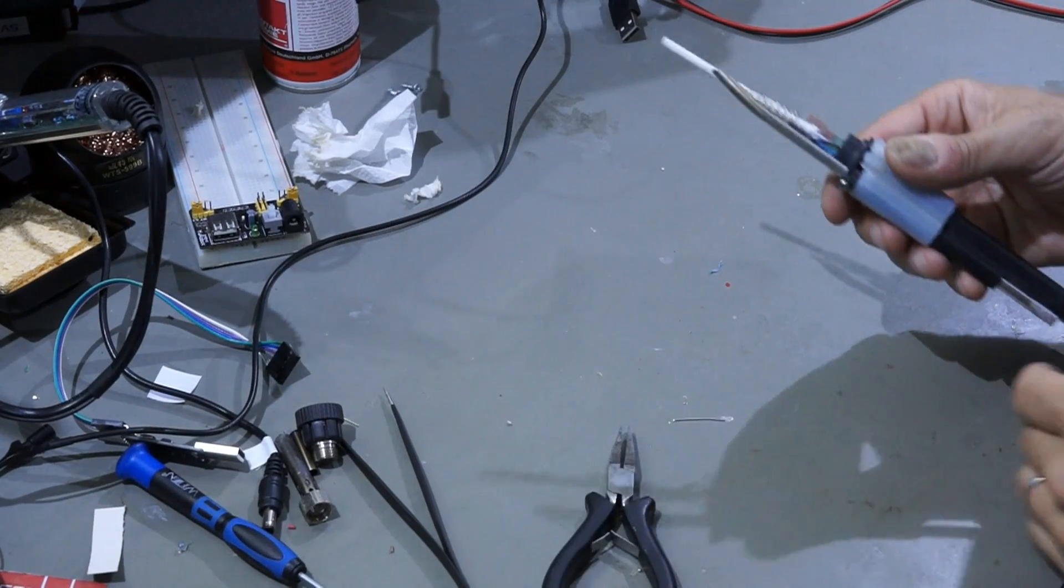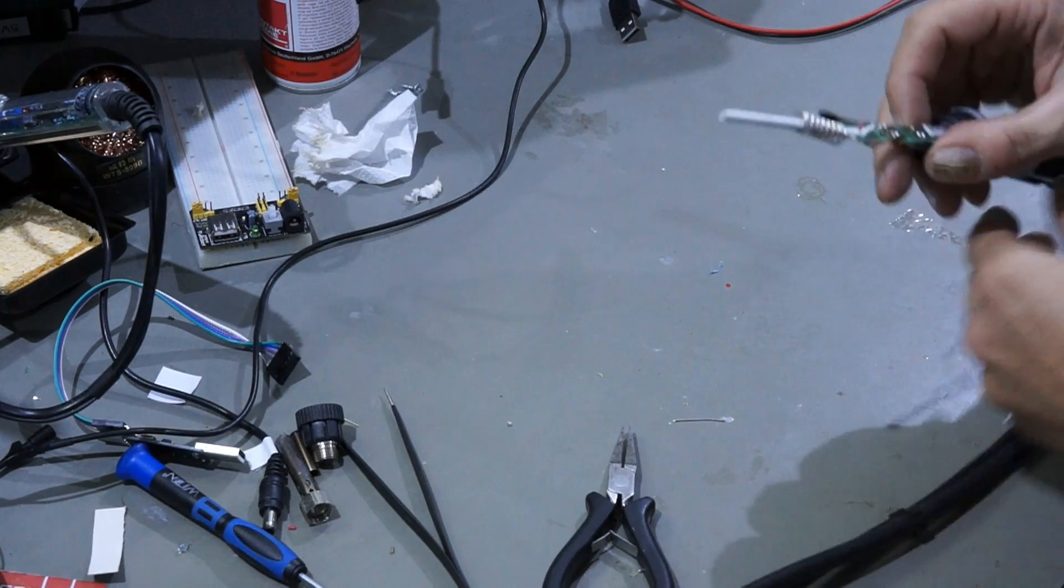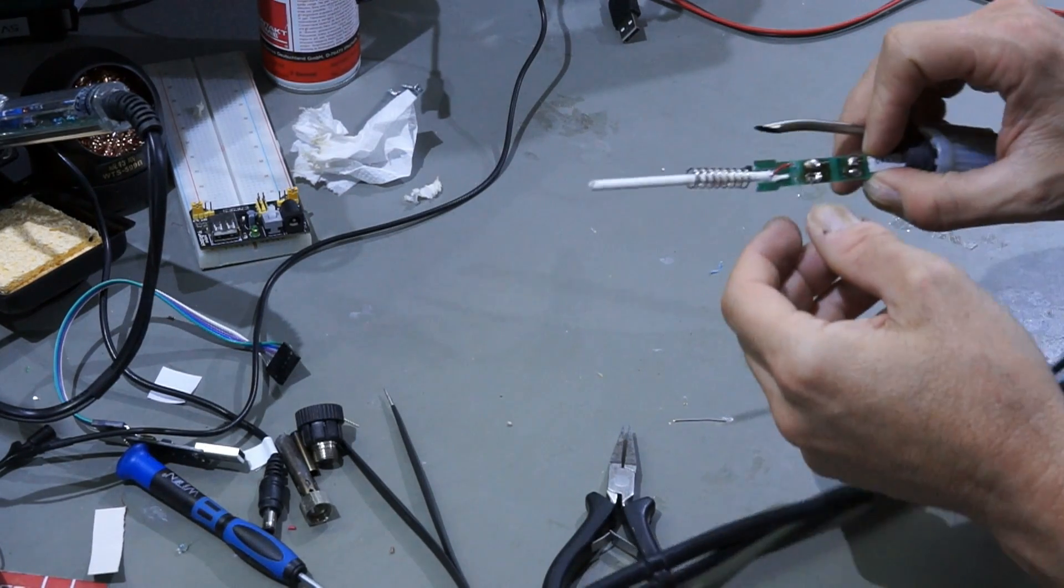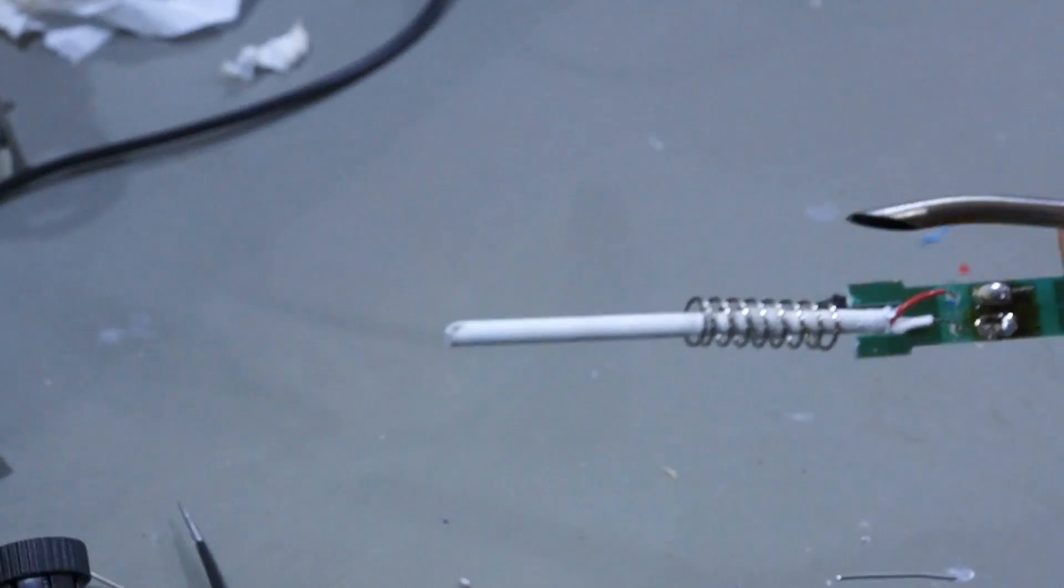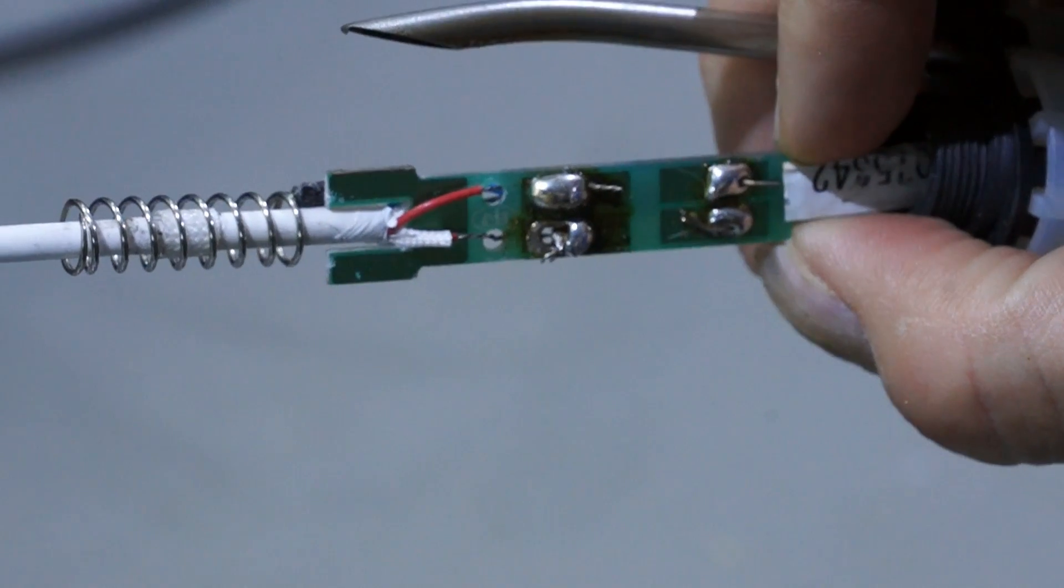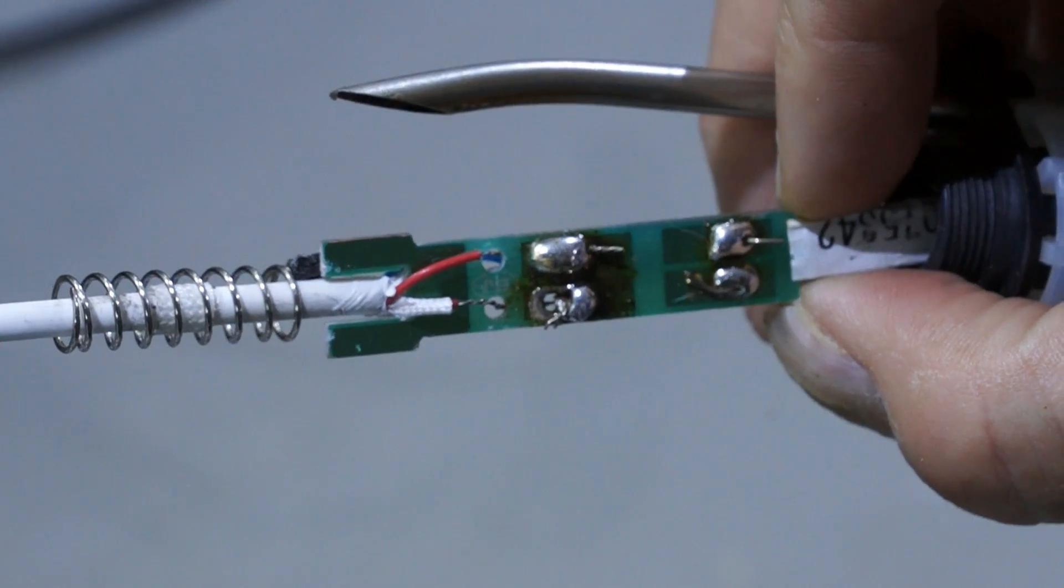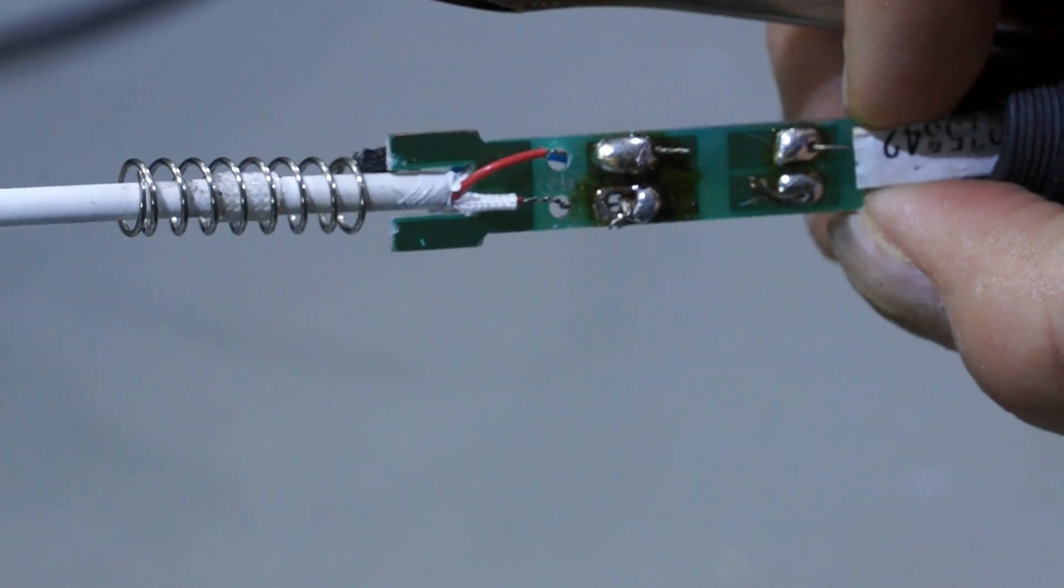At the end you see the four soldering points connecting the heating element with the cable. The two points in the front are connected with the heating element, and the two back points are connected with the thermocouple. You can find a good video explaining how heating elements are built below in the comments.